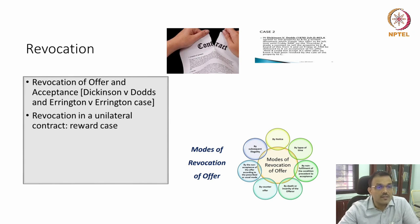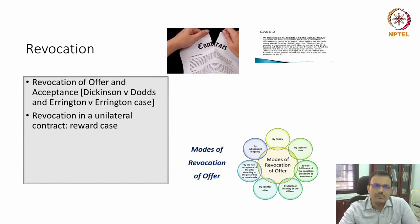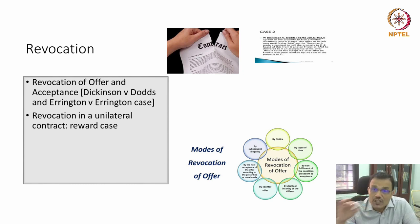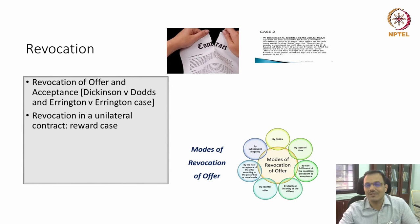So this is where you understand that in contracts, the possibility to withdraw offer and acceptance definitely arises. Now, coming to acceptance — you will notice that even acceptance can be revoked. Like an offer, acceptance can also be revoked. However, there were differences of opinion in common law, because Anson had said acceptance is like lighting a match to a train of gunpowder — once there is acceptance, the legal obligation comes. Can you really recall that acceptance?